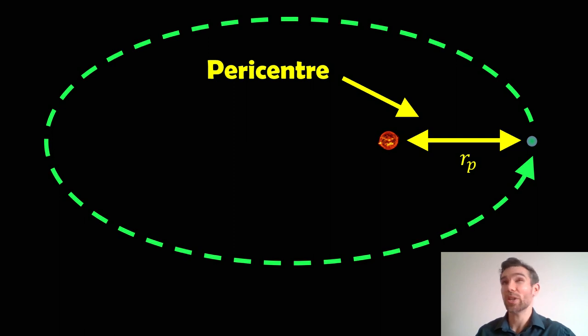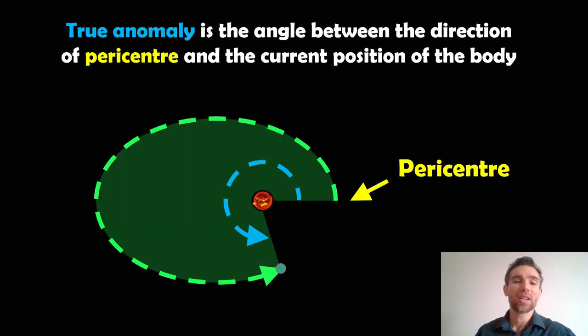So we've got the pericentre, can also be known as the periapsis, the perihelion, depends on the context of the orbit and what we're discussing.